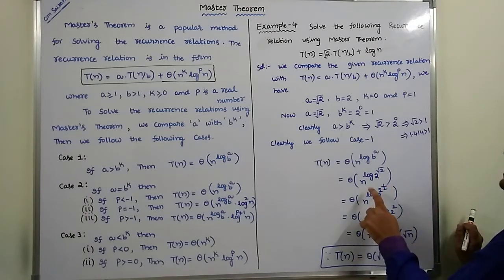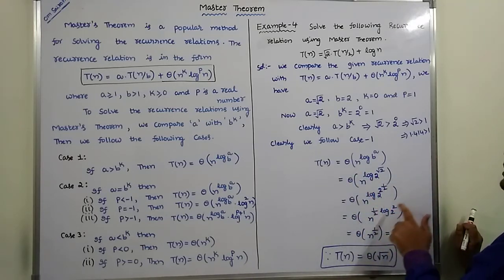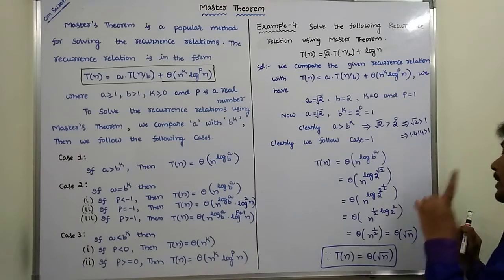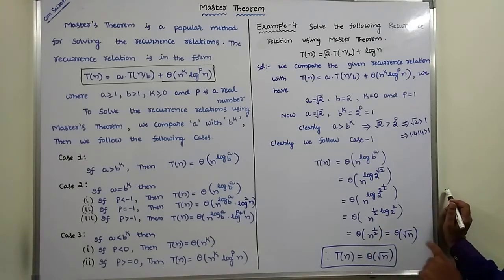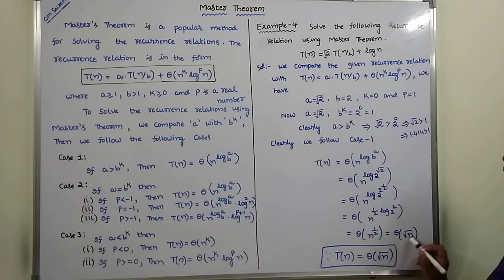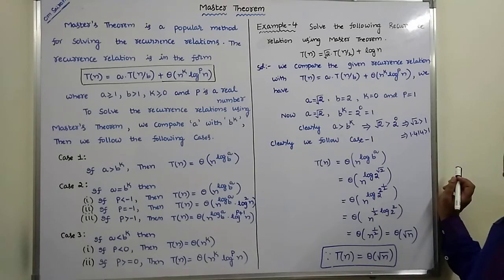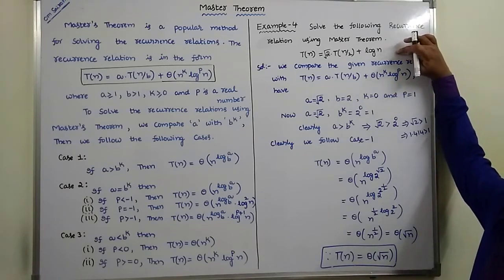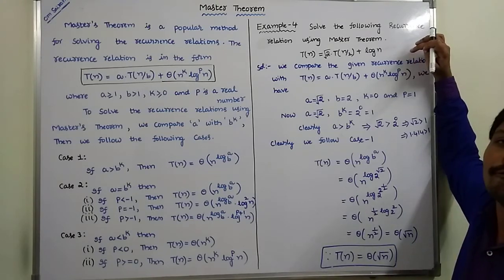The 1/2 exponent moves in front of the log, giving n^(1/2) · log_2(2). Since log_2(2) = 1, this simplifies to n^(1/2) · 1 = n^(1/2). Therefore, n^(1/2) can be written as √n. So the time complexity is Θ(√n), or equivalently Θ(n^(1/2)).